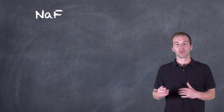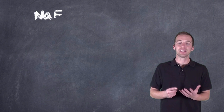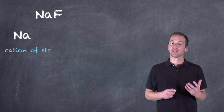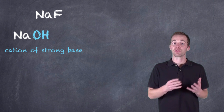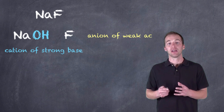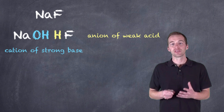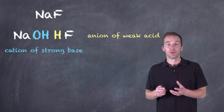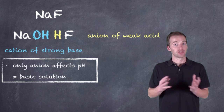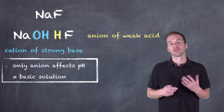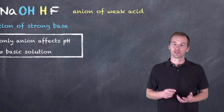Let's take a look at another example: sodium fluoride. If we take a look at these individual ions, we can see that sodium likely comes from sodium hydroxide — either way, it's the cation of a strong base. We have the fluoride ion, which comes from hydrogen fluoride, which is a weak acid. Since it stems from a weak acid, it is likely to act as a base — not a strong base, still a weak base, but stronger than water. So in this case, only the anion affects pH, and we would classify this as a basic solution.